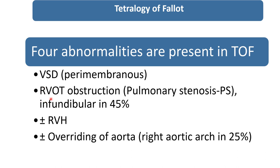Another is right ventricular outlet tract obstruction, pulmonary stenosis, and in 45% of cases it is infundibular stenosis. Patient may or may not have right ventricular hypertrophy at the time of presentation, and also overriding of aorta may or may not be present.